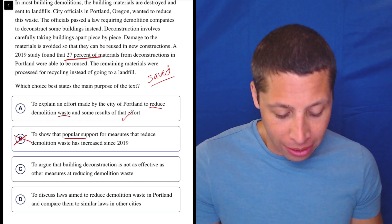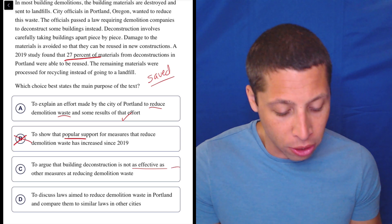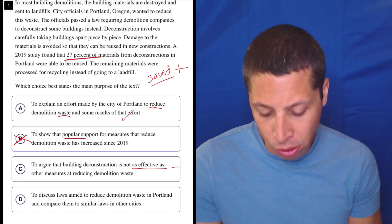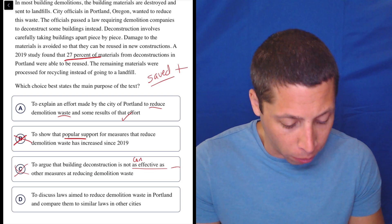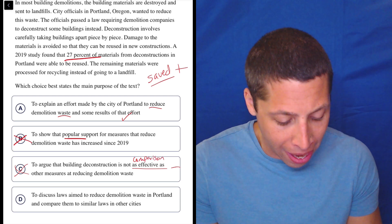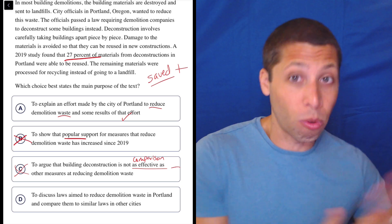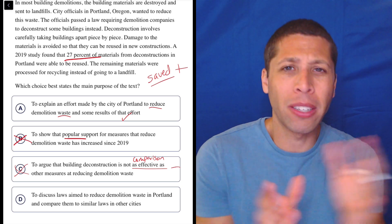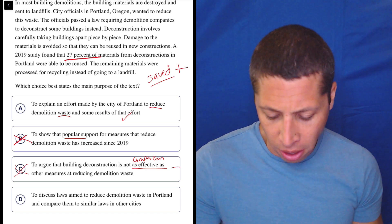C, to argue that building deconstruction is not as effective as other measures. No, the whole point is that it's good, right? So positive, negative, you just use connotations. That's bad. Plus, not as effective, right? What are we doing? We're making a comparison. Was this passage comparing demolition waste to anything else? Maybe it was comparing it to just throwing it all in the landfill, but it wasn't comparing it to other types of ways of saving things. So this is just another classic trap.